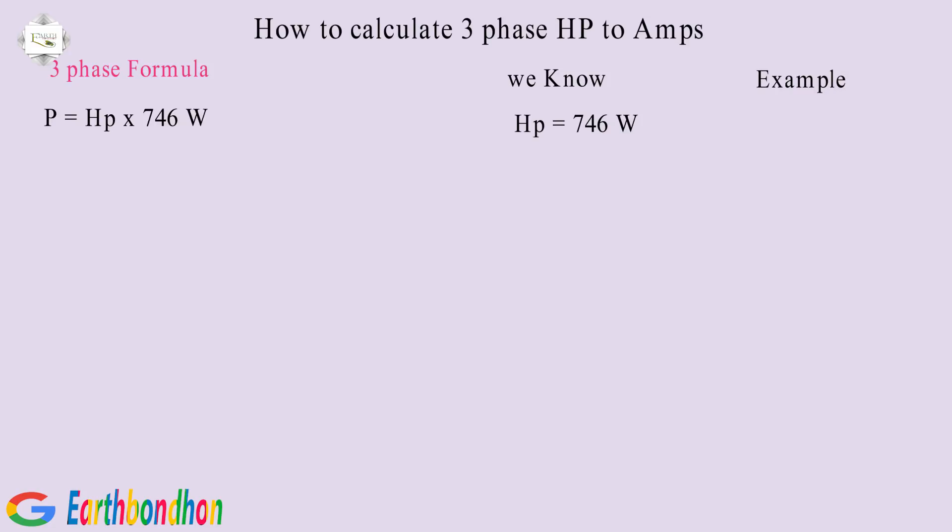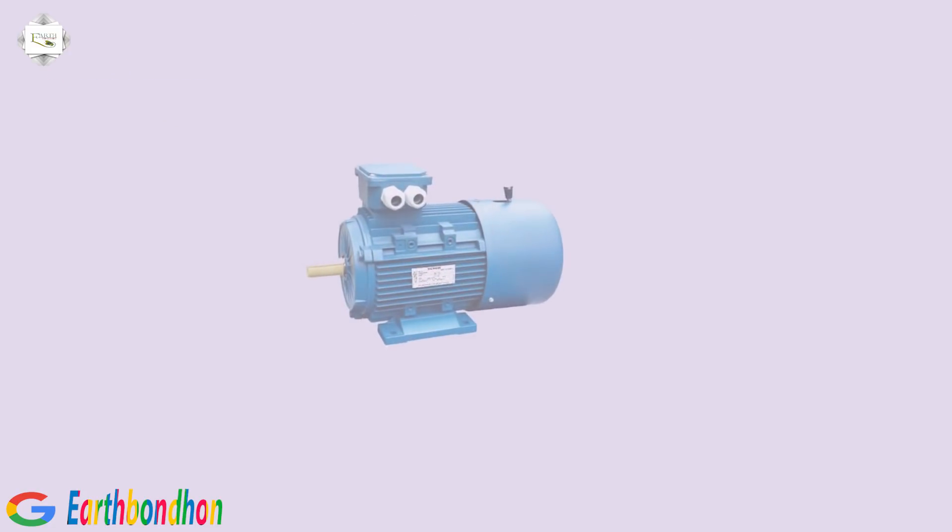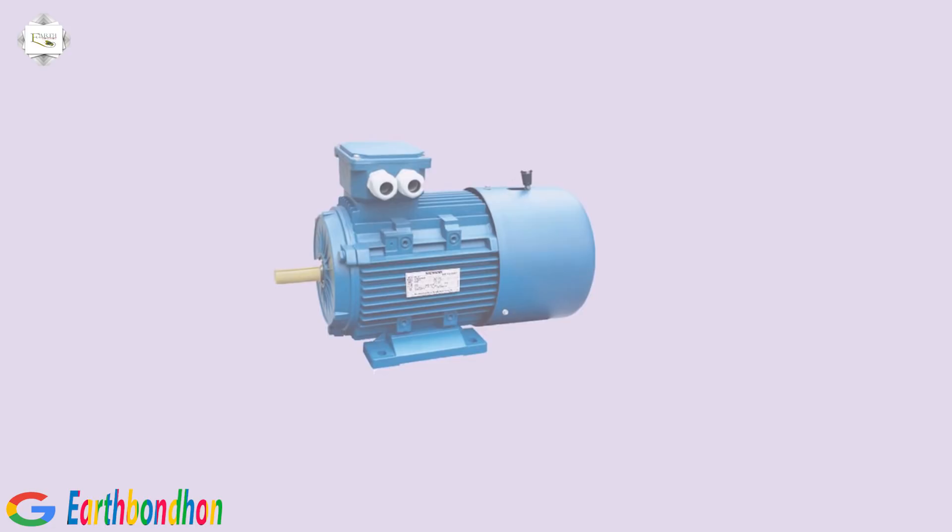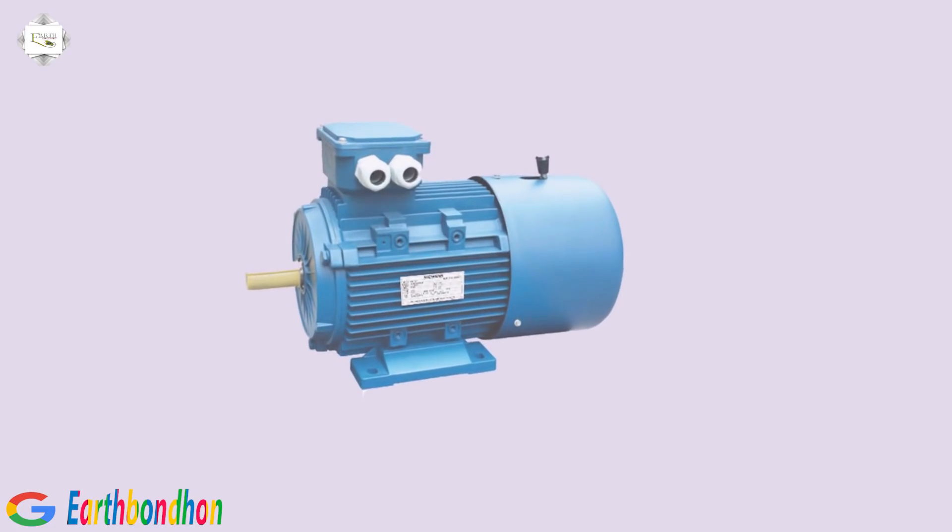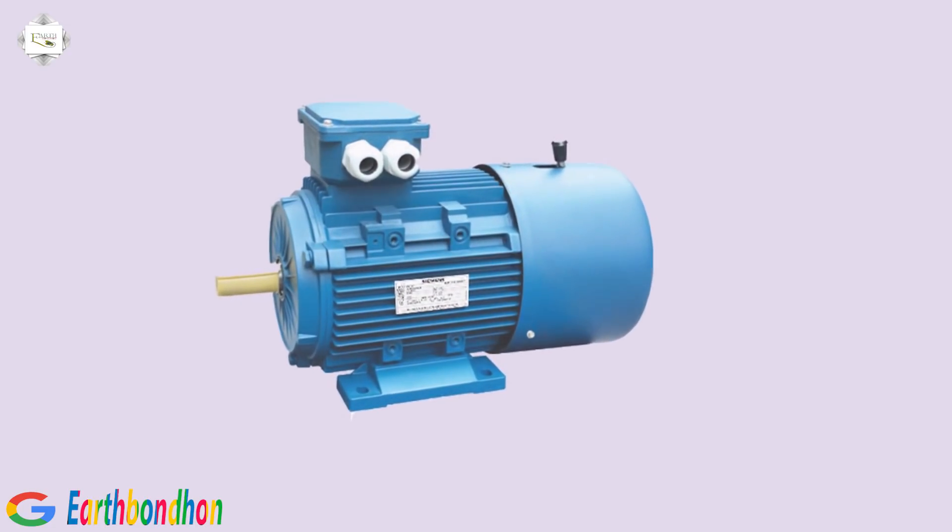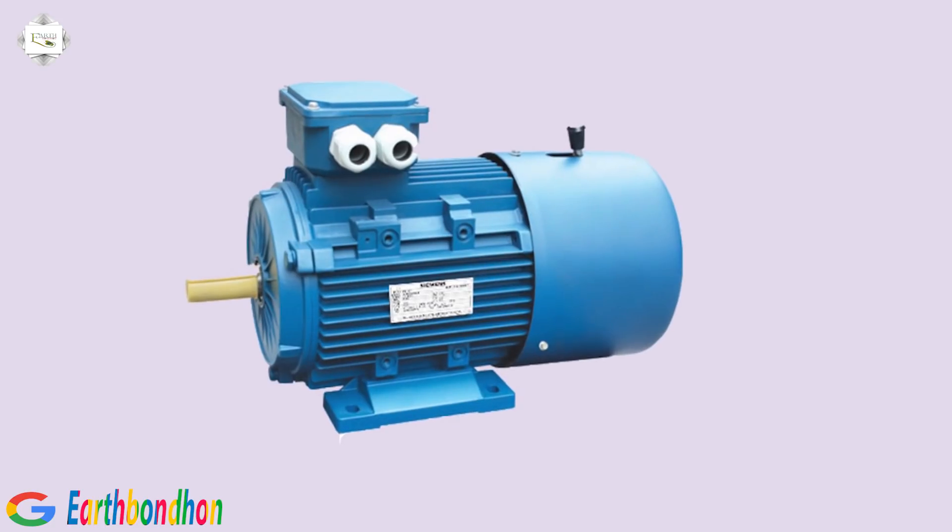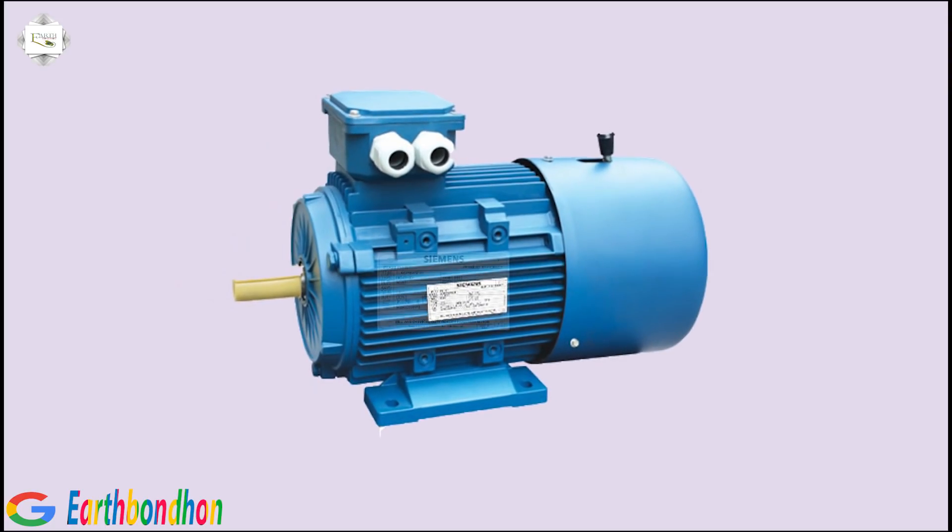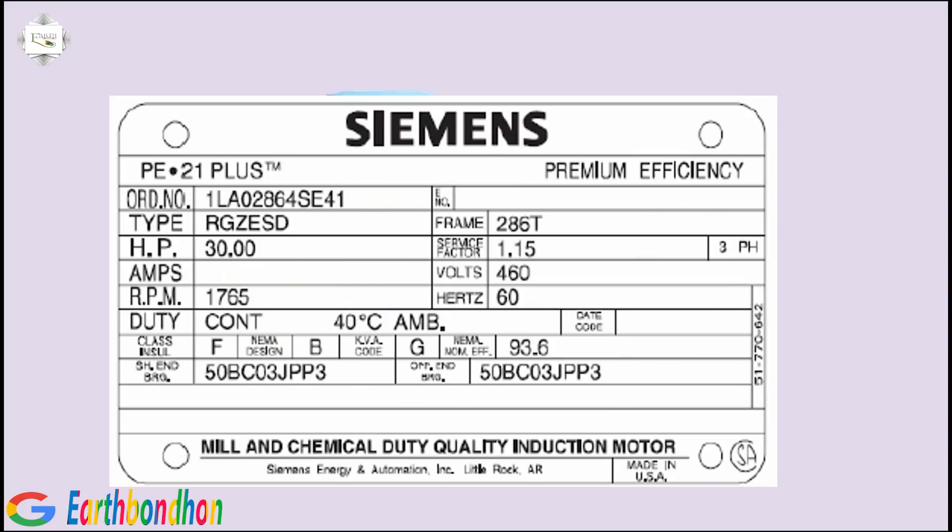Example: An induction motor or a 3 phase induction motor is an AC electric motor in which the electric current in the rotor needed to produce torque is obtained by electromagnetic induction from the magnetic field of the stator winding.